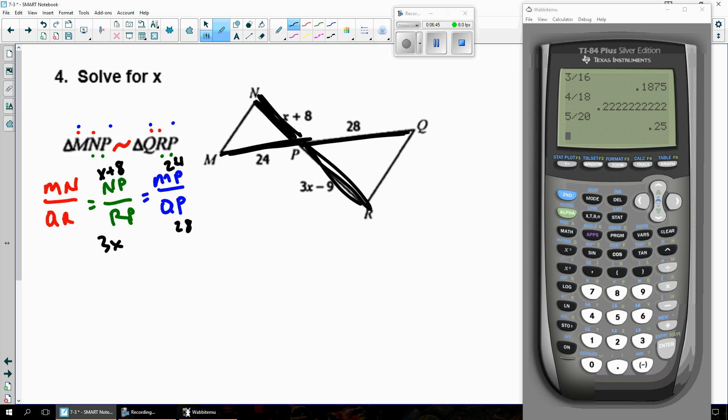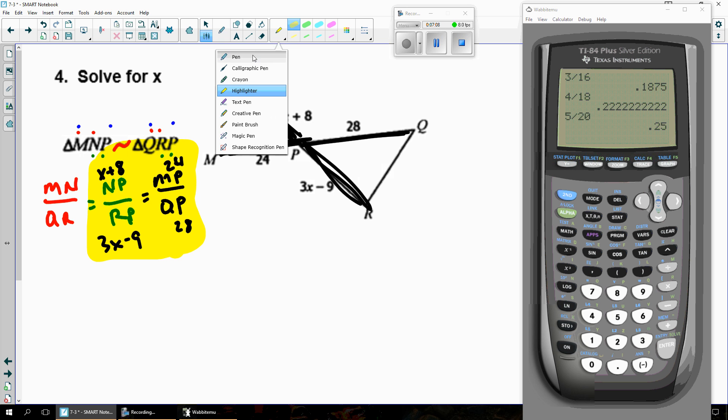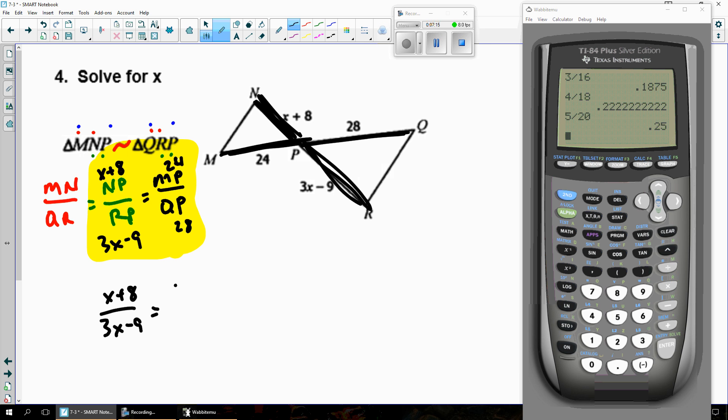So the part of this formula that I need to use is this part. I didn't even put anything on that front part. And I'm going to rewrite that with just the black numbers filled in. And so we get X plus 8 over 3X minus 9 equals 24 over 28. So I'll cross multiply 28, X plus 8, and I'll cross multiply 24, 3X minus 9.